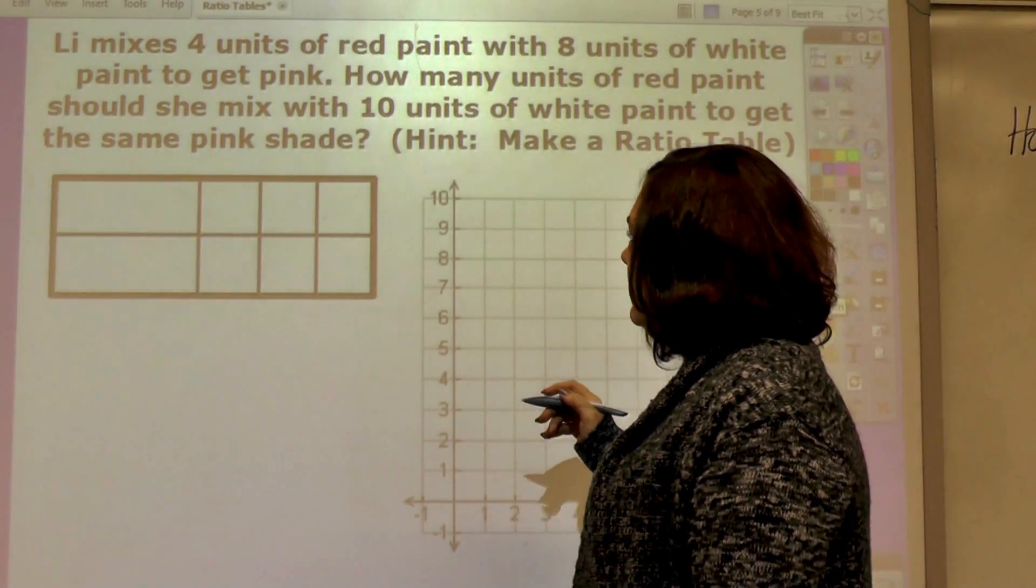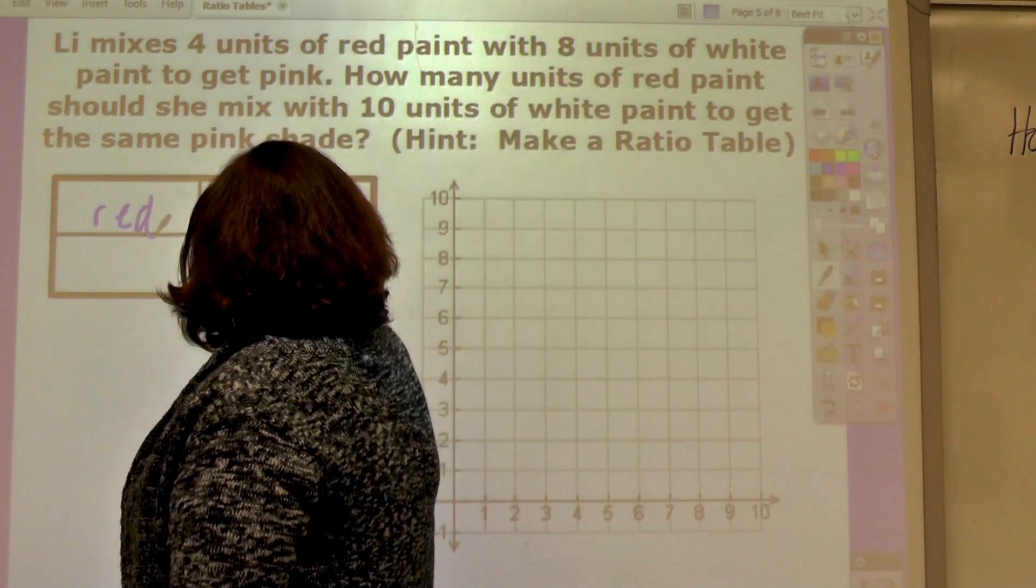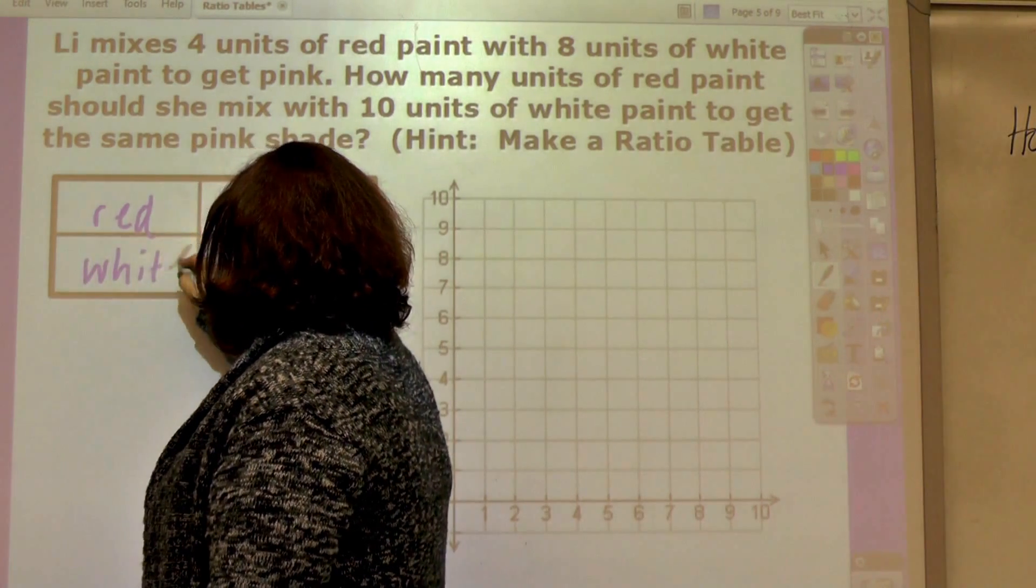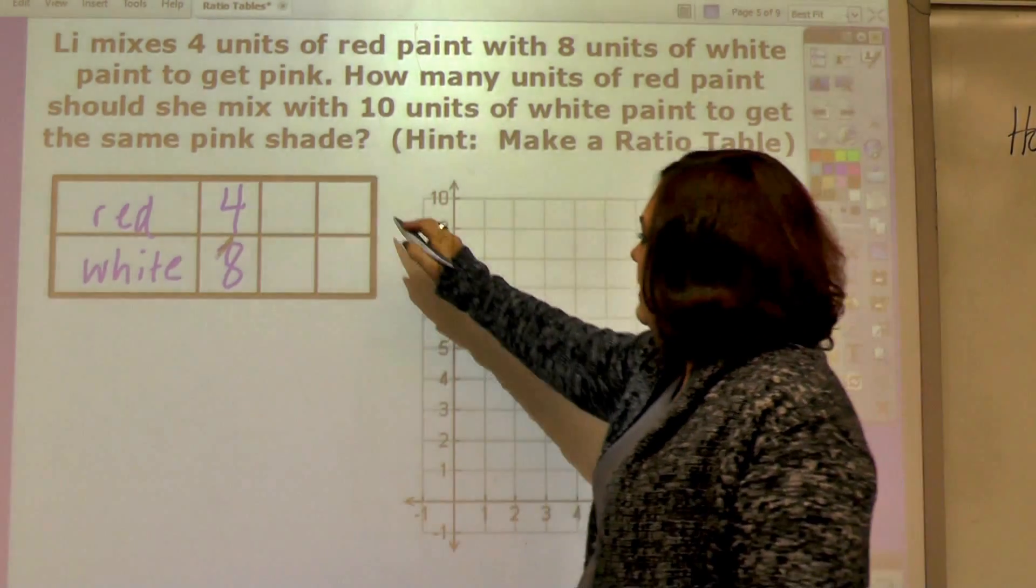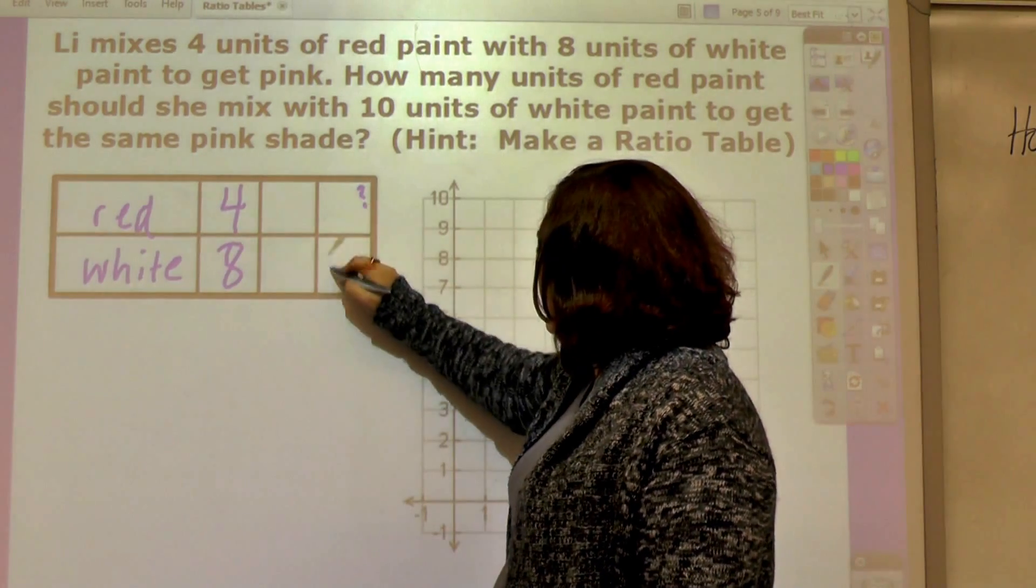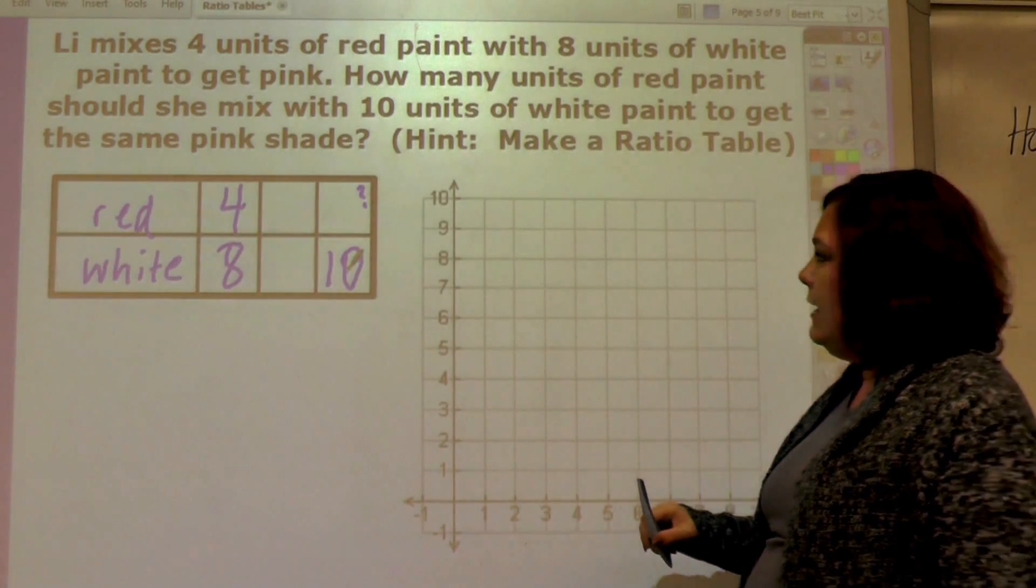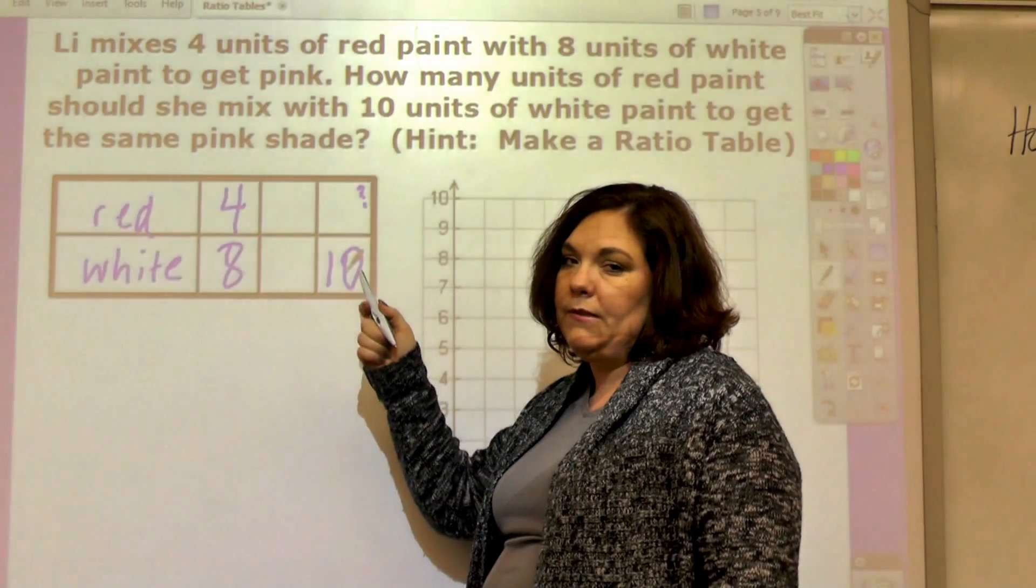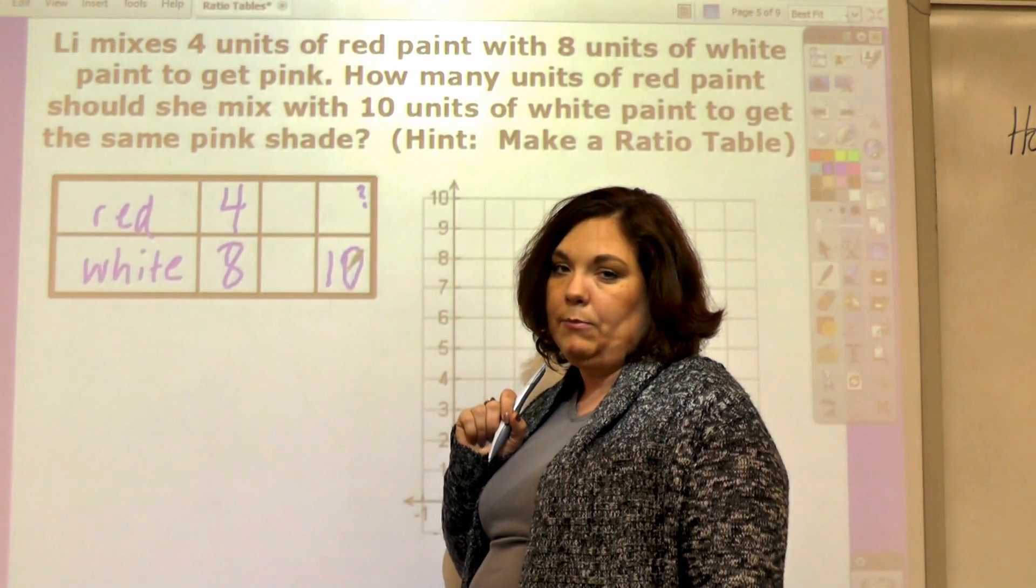Lee mixes four units of red paint, so that's red, with eight units of white paint. How many units of red paint, this is what I'm looking for, would she mix with 10 units of white paint? 10 is the information that I have to get the same shade pink. I can't go directly, so I need to simplify before I multiply. Finish filling out the ratio table. When you come back we'll graph these points.